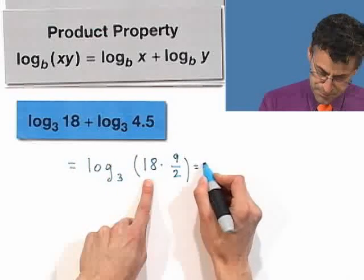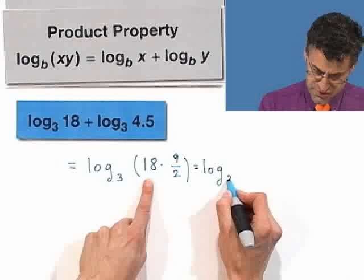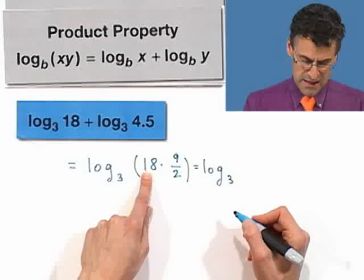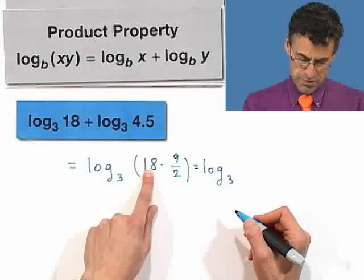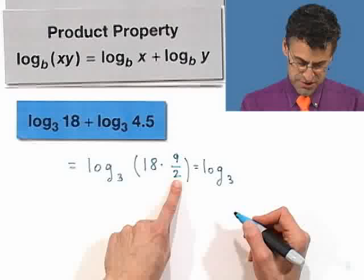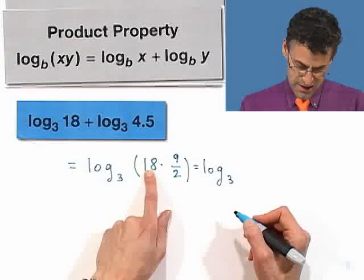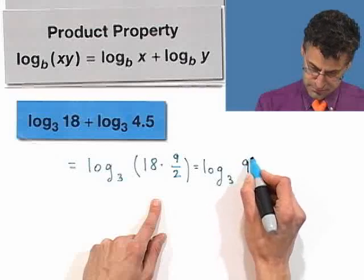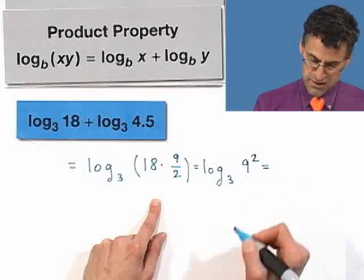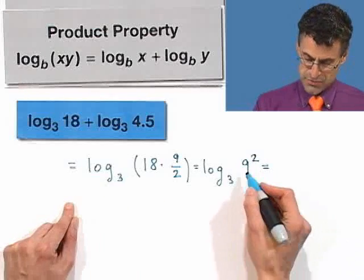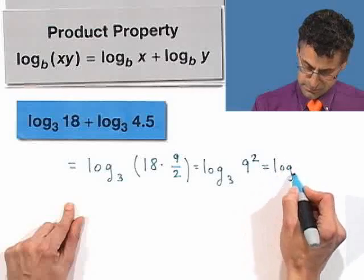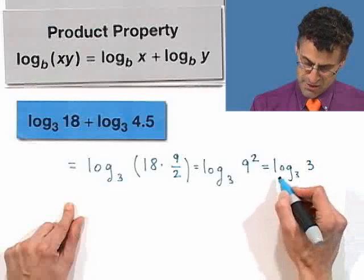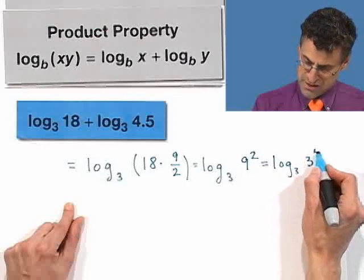And now I can actually simplify this. So log base 3, well, let's see. 18, that's 9 times 2. And so that 2 and that 2 downstairs cancel. So I'm just left with 9. And so I have 9 times 9, that's 9 squared. I could write actually 9 as 3 squared. And so that's going to be 3 squared squared, which is 3 to the 4th.